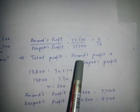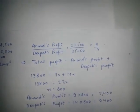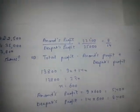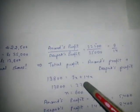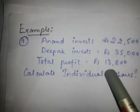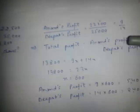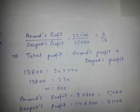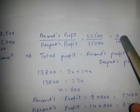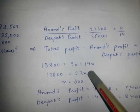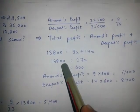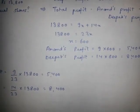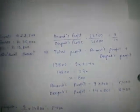The total profit equals Anand's profit plus Deepak's profit. You can solve this by two methods. In the first method, the total profit is 13,800. We set Anand's profit as 9x and Deepak's profit as 14x, add them and set equal to the total profit to get the value of x, then substitute back to find each partner's profit.